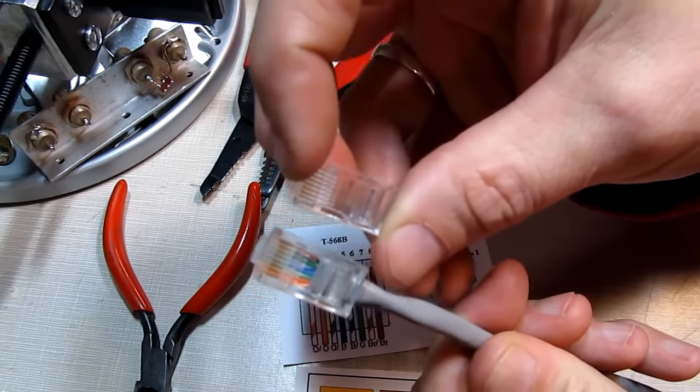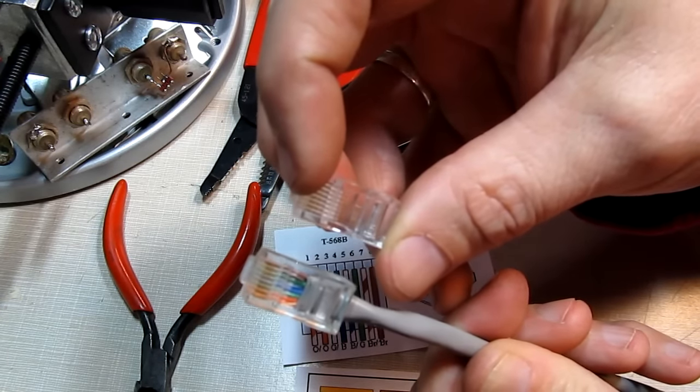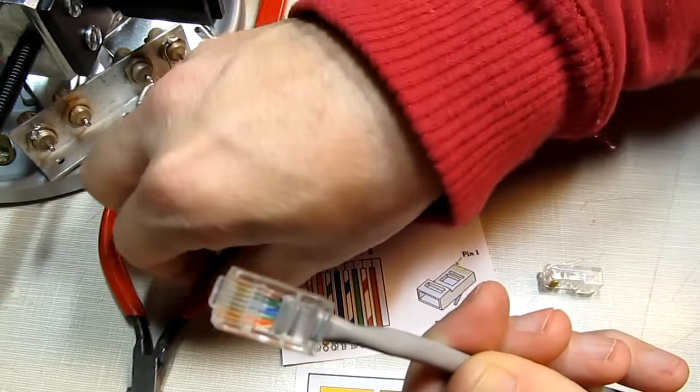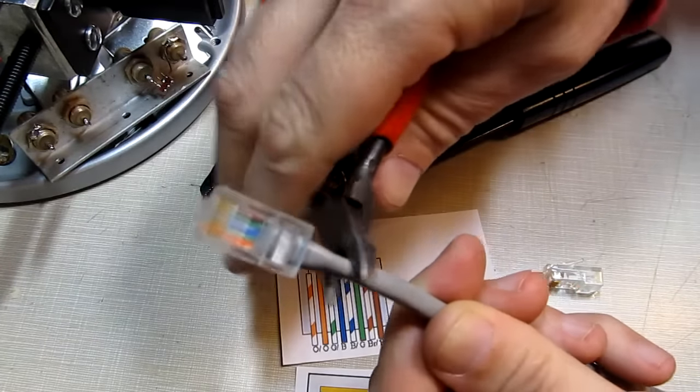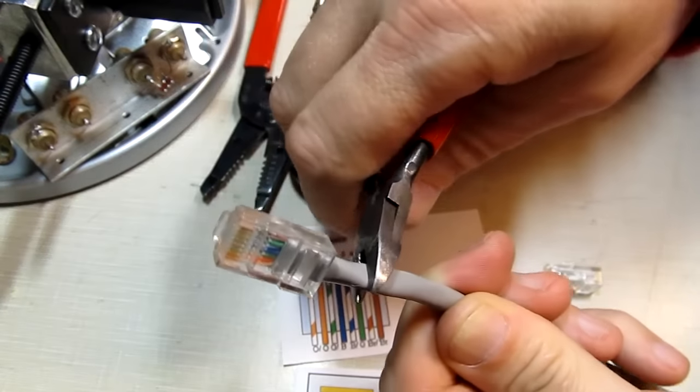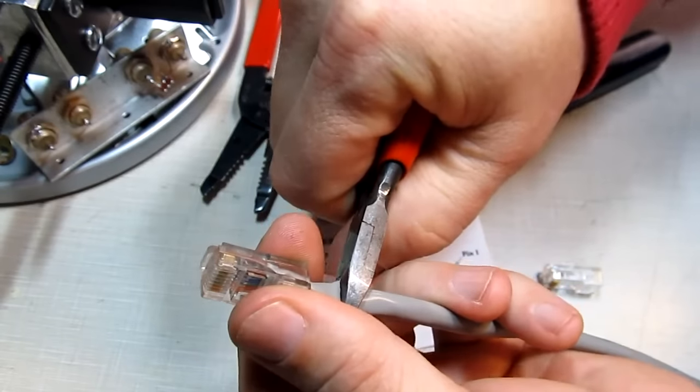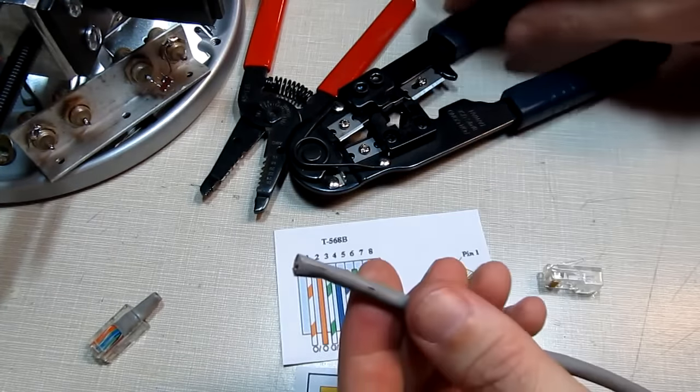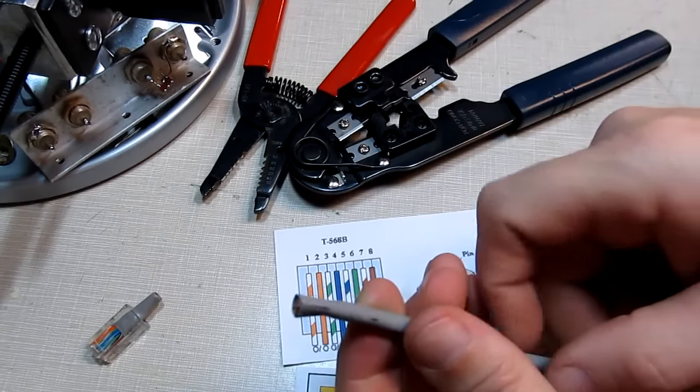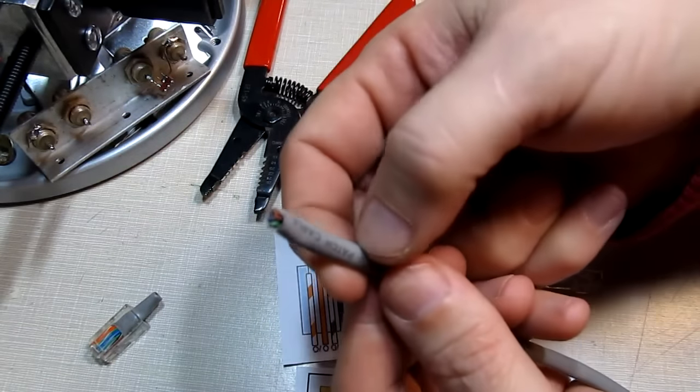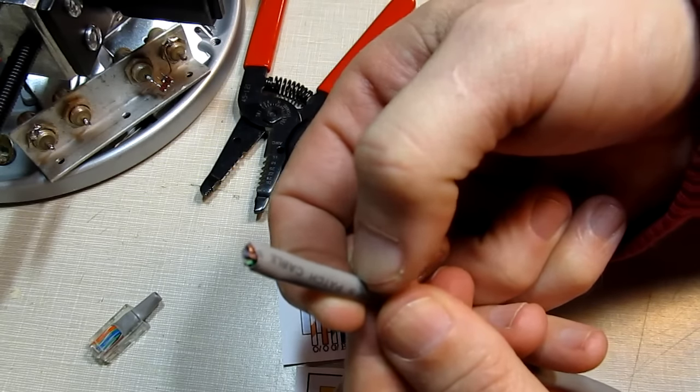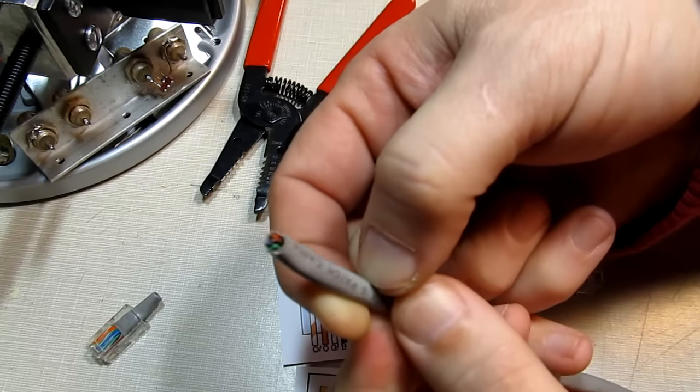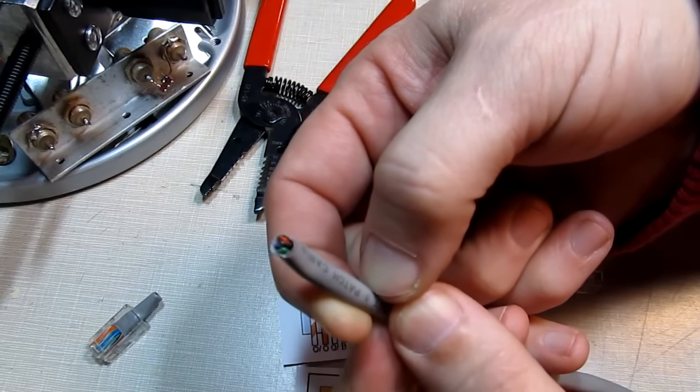As with installing many different types of connectors, it's all about having the right tools. So the first thing we'll do is just cut this end off since we're not going to need it anymore. You can use anything you want there, a pair of diagonal cutters or even the crimping tool will often come with a set of cutting blades on it as well. I like cutting the cable back about an inch and a quarter to an inch and a half to get at the wires to prepare them to stick in the connector.